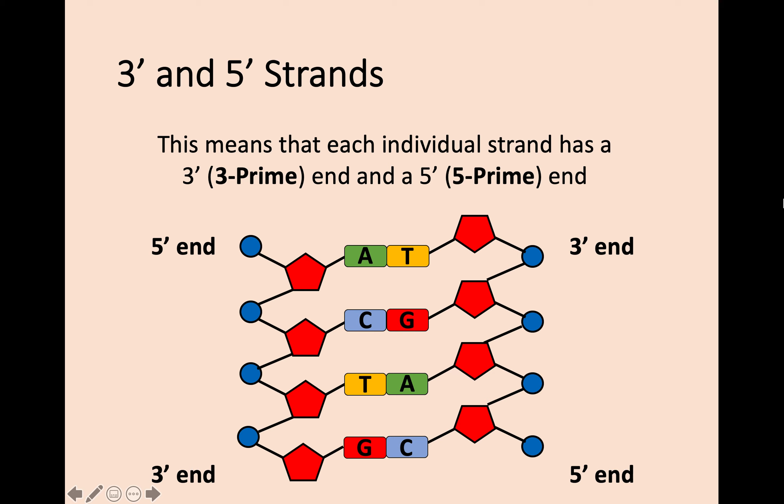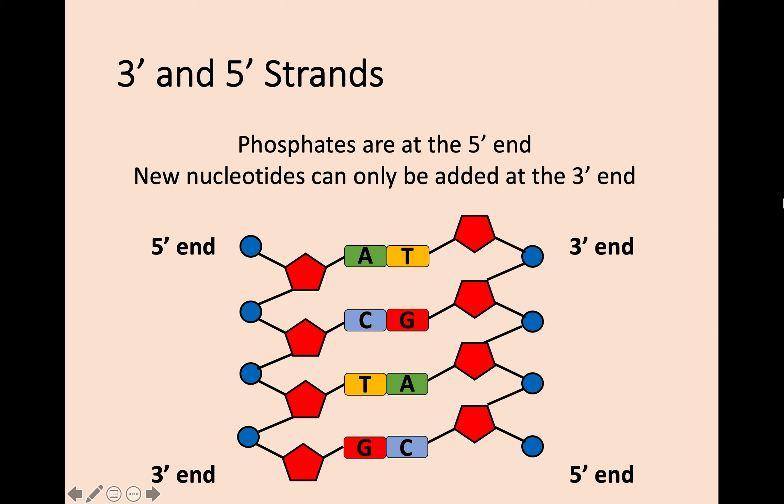On the left hand side here we're running from five prime down to three prime. This will become more important in Key Area 2, but what's really interesting is that at this three prime end at the bottom, that is the only area that new nucleotides can be added. If you look at the five prime end, that just ends in a phosphate. One way to remember is that the five end and phosphate both have an F sound. Also, new molecules being added onto the three prime end—new has three letters, so that might help you remember that's the three prime end. That's the anti-parallel structure we're looking at.